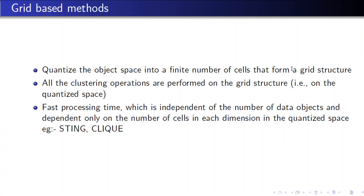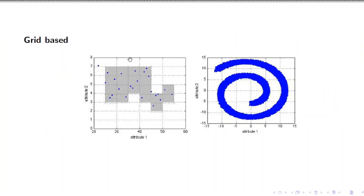The last category is grid-based methods, where points are clustered based on a grid structure. The grid is an object space having a finite number of cells, and clustering operations are performed on this grid structure. The key advantage is that it is faster than other clustering techniques and depends on the grid structure rather than the number of data objects. Algorithms include STING and CLIQUE.